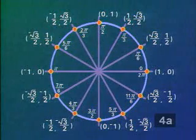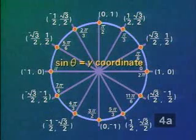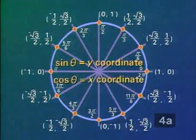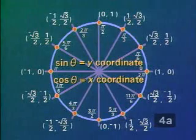As we proceed, you must remember that in a circle of radius 1, the Y-coordinate of the point is the sine of angle theta, and the X-coordinate is the cosine of angle theta.